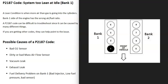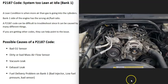When you have a V6 or V8 engine, the engine will have two banks. Bank one is always the side of the engine with the number one cylinder, and the opposite side is bank two. If you have a four-cylinder engine, it wouldn't matter because there'll only be one bank.